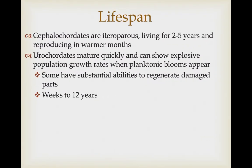Cephalochordates are iteroparous, reproducing several times during their life and generally living two to five years. Their reproduction is usually limited to a season associated with warmer water temperatures. Urochordates mature very quickly from the tadpole larval stage and can show really rapid population growth associated with planktonic availability — when food supply is high, they grow and reproduce very quickly. Their lifespan is quite variable: some only live a few weeks, others up to 12 years, and some have substantial abilities to regenerate damaged body parts.